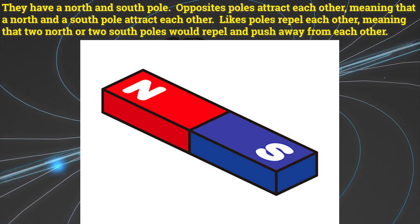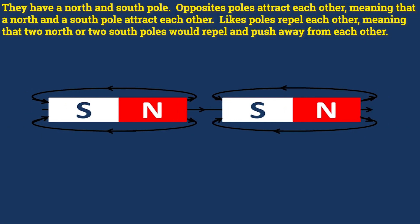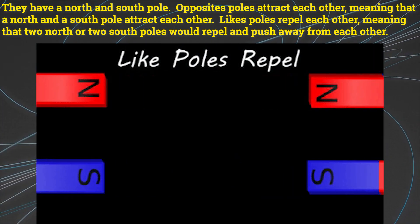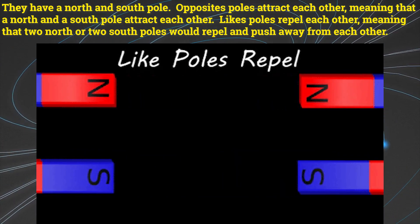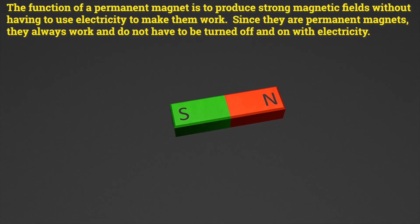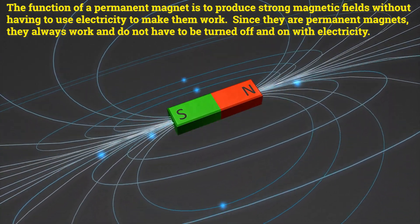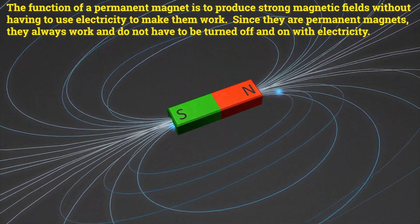Bar magnets demonstrate the most common magnetic behaviors. They have a north and south pole. Opposites attract each other meaning that a north and south pole will attract each other. Like poles repel each other meaning that two north or two south poles will repel and push away from each other. The function of a permanent magnet is to produce strong magnetic fields without having to use electricity to make them work.